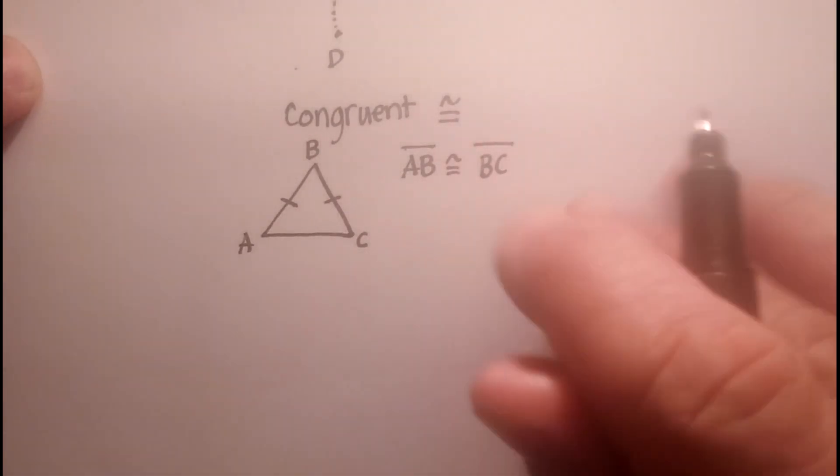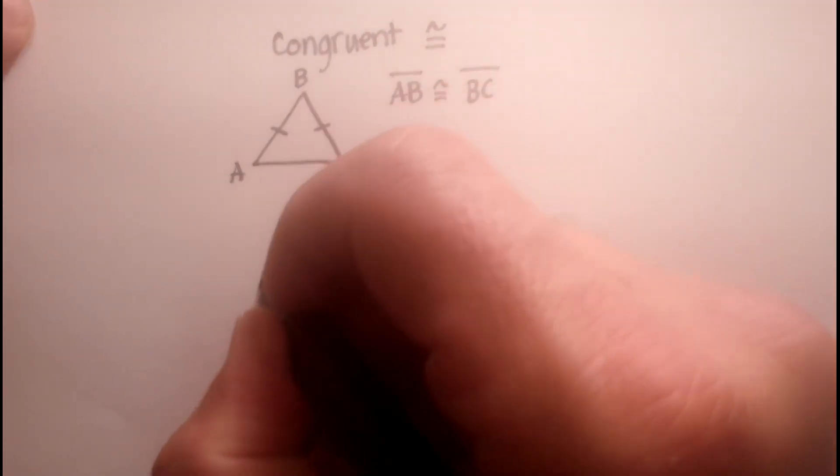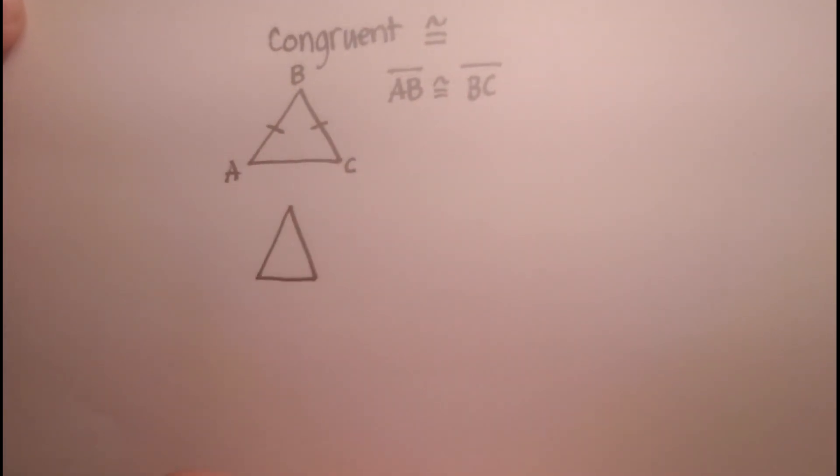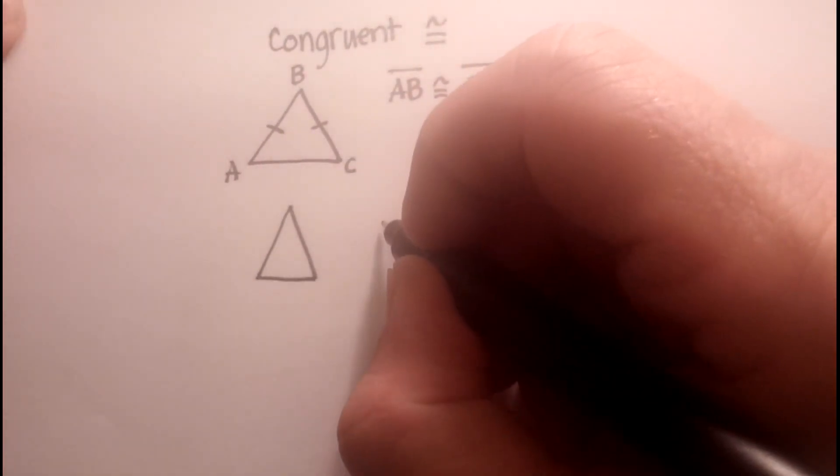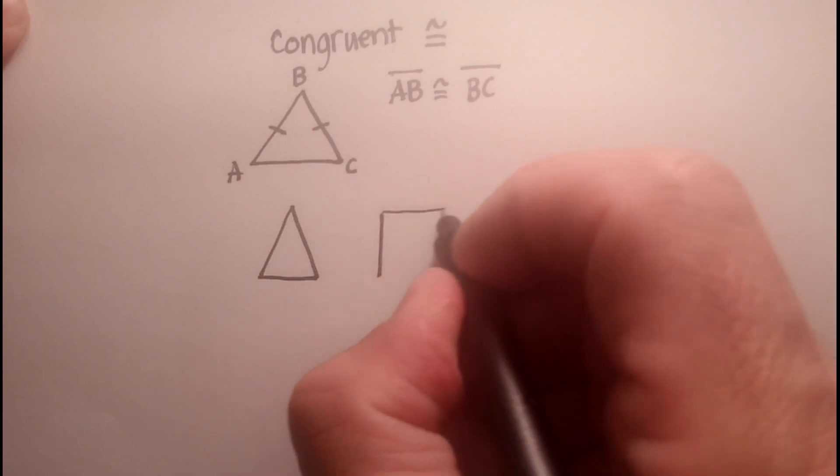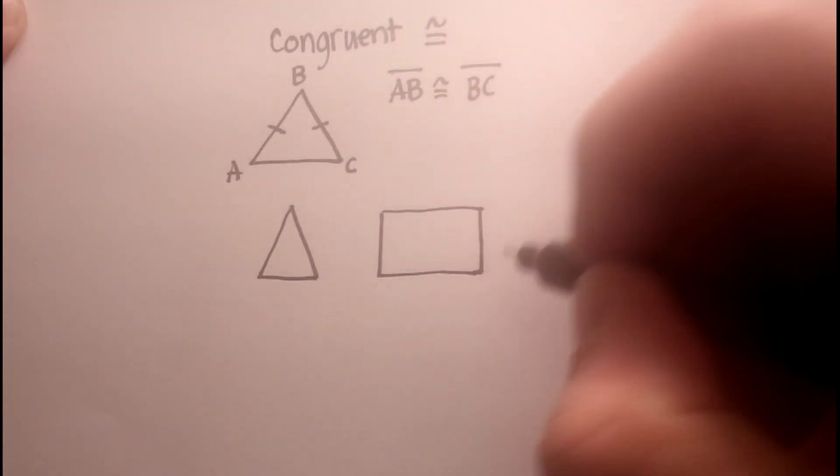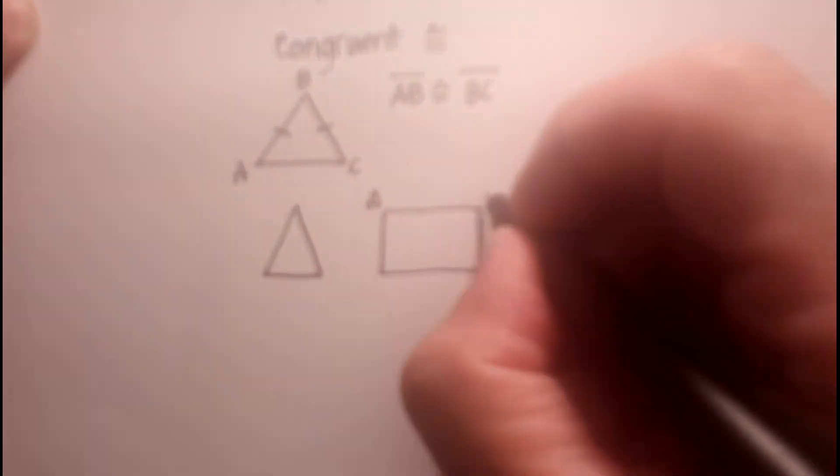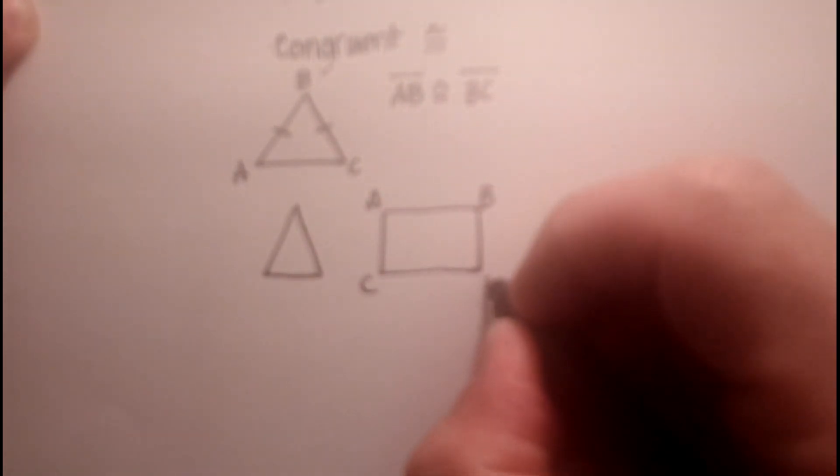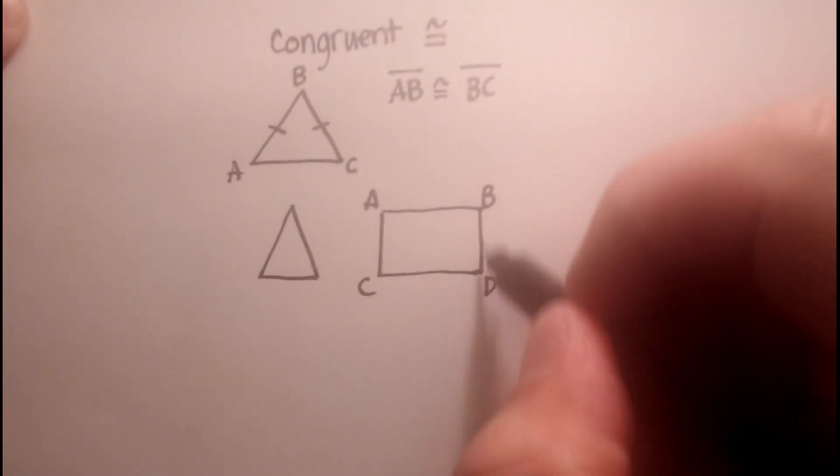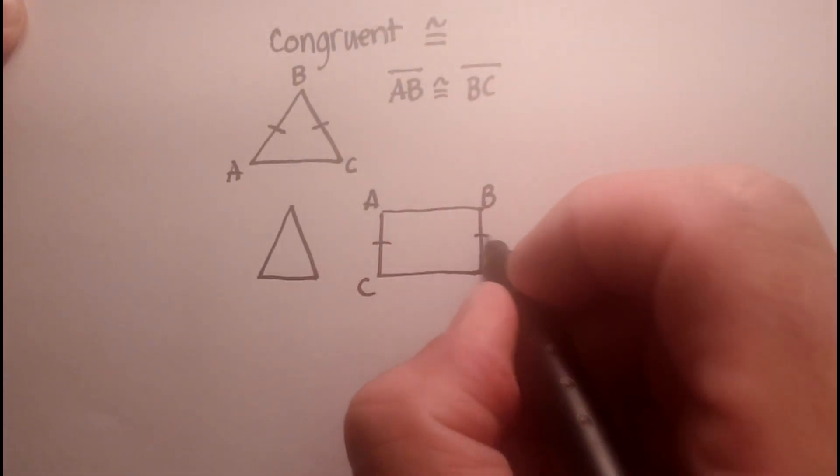So if I had, for example, another triangle that looks something like this. Or let's say another figure, let's say that looks like this. Actually, let's try this one because it's a little bit better. I could say that AC and BD are congruent. I would do that.